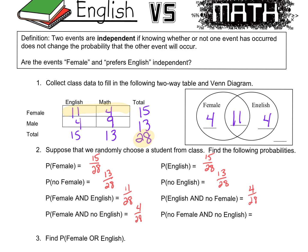You guys already knew this — this is review. We did this last week. This is Section 4.2 review. Questions 2 and 3 are all from our notes last week on Section 4.2. Probability of no female and no English — so no English, no female — would be males liking math, and that's 9 out of 28. That's how we can do the probabilities looking at the two-way table.